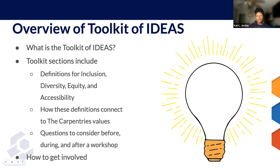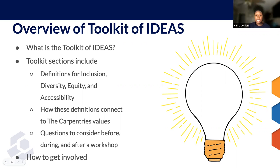There are several sections included in the toolkit. We start with some definitions — the terms I just shared — and how these definitions connect to the Carpentries' core values. Then there are questions you should consider before, during, and after a Carpentries' workshop, all related to building inclusion, creating an inclusive environment, bringing more diverse people into your workshops, and creating equitable and accessible environments. Lastly, the toolkit also includes how you can get involved and work with us to develop this resource.